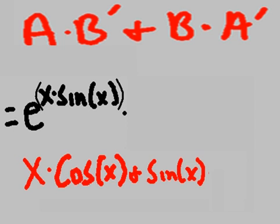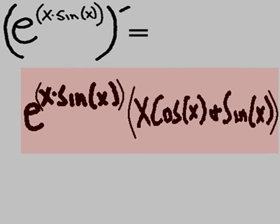Let's get rid of the clutter at the top. Move this up. Change the color. That looks good. And e to the x times sine of x prime equals what? E to the x sine of x times x cosine x plus sine of x. That's our answer.